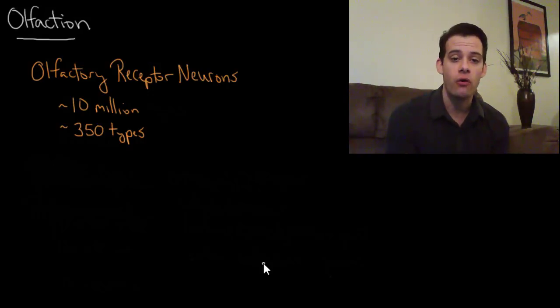In the case of smell we use olfactory receptor neurons. So these are neurons that are specialized for interacting with odorant molecules. Odorant molecules are molecules that float through the air off of the objects that we smell and they go up our nose and they interact with these receptor neurons.